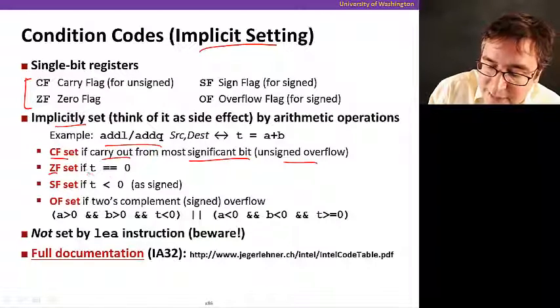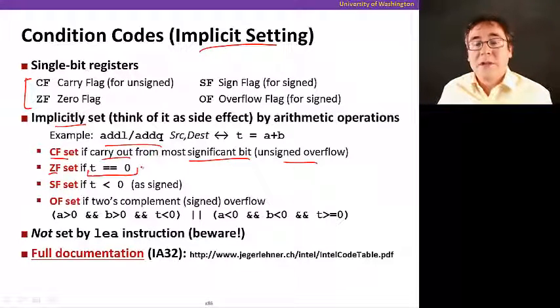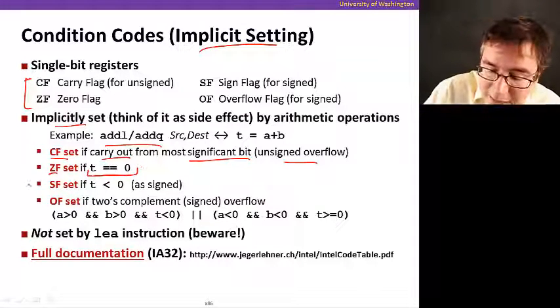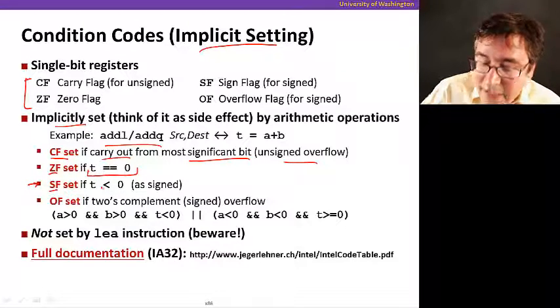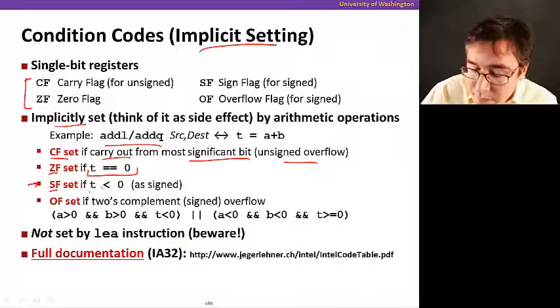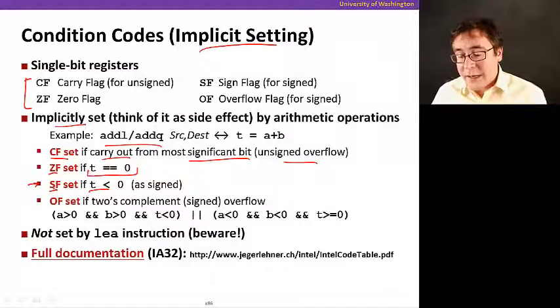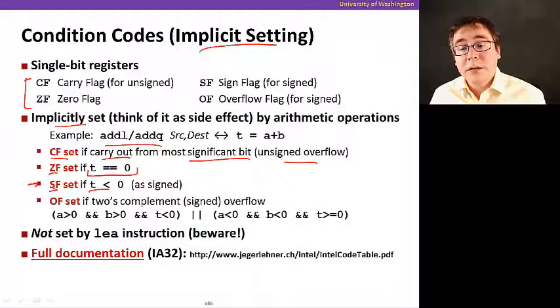The ZF condition is set if the result happens to be equal to zero. The sign flag is set depending on the result. If the result is negative, then SF is going to be set, meaning it's a negative number.